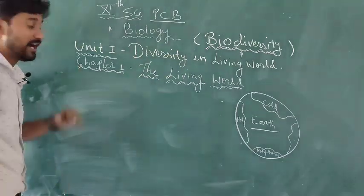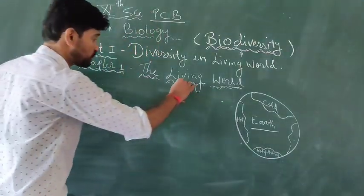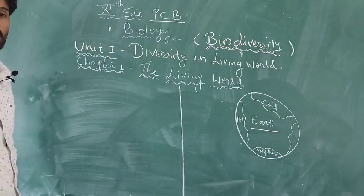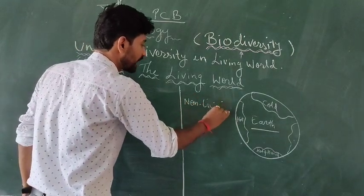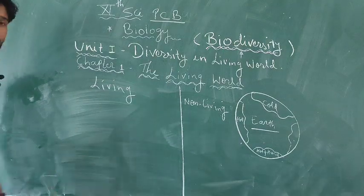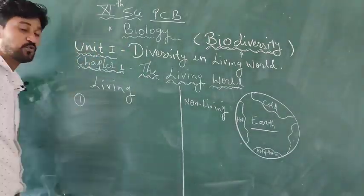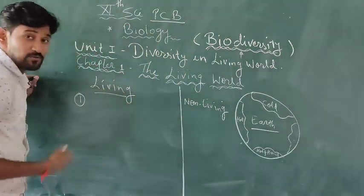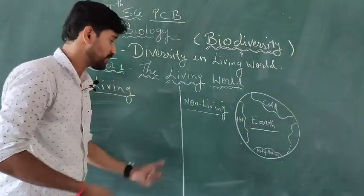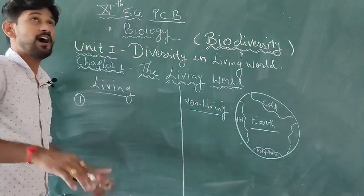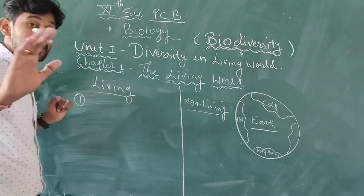Now we come to Chapter 1, known as The Living World. If we have to study the living world, first we should know what is living and what is non-living, or the difference between living and non-living organisms. We can differentiate between the living and non-living by giving a few definitive properties. For example, a pole, chalk, and mic are non-living, but I am a living thing.